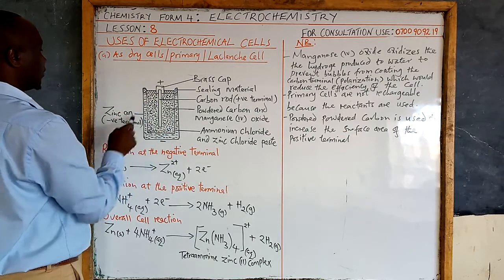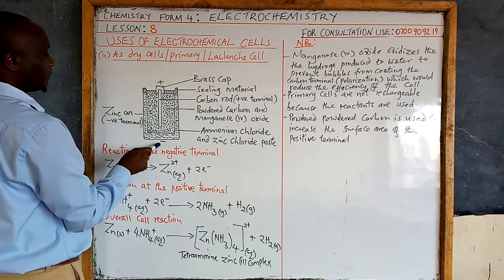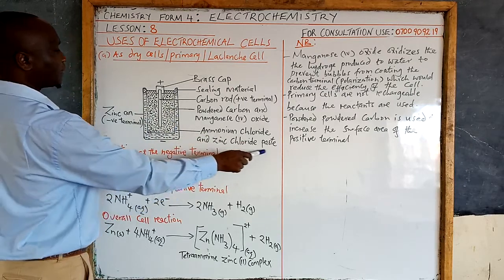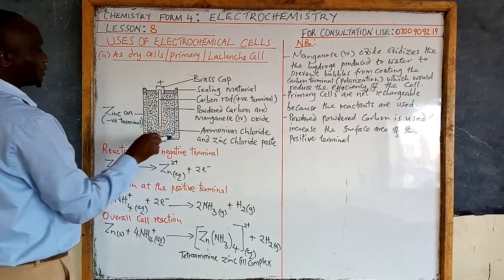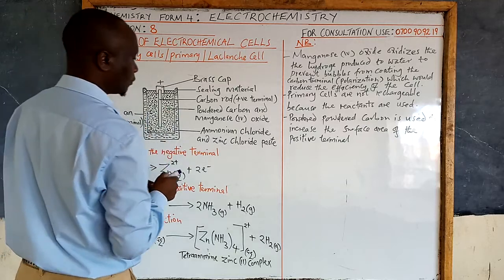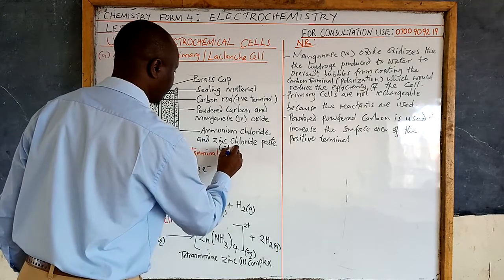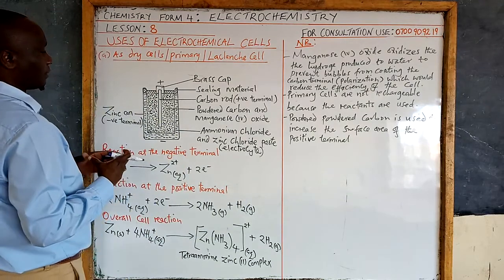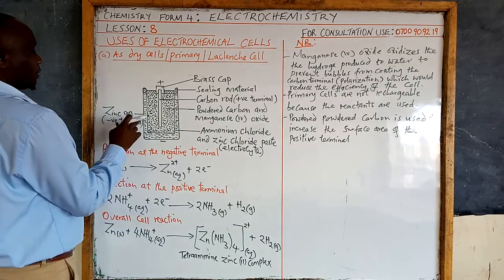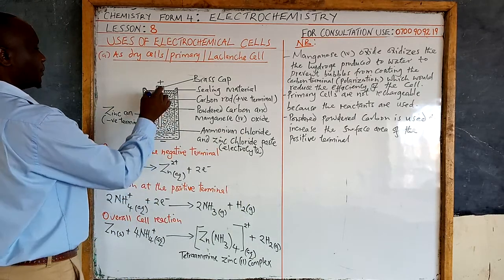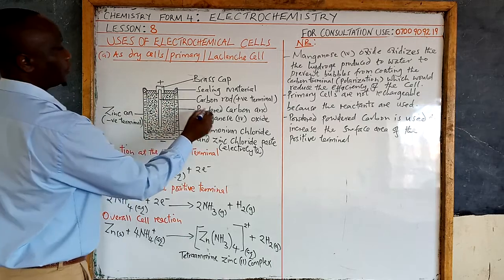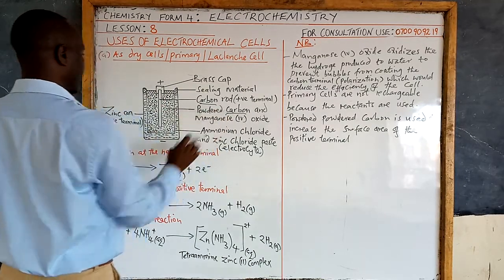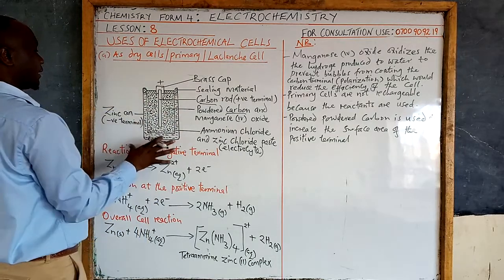The three main parts: the outer zinc can forms the negative terminal. The second part is the ammonium chloride and zinc chloride paste, which acts as the electrolyte. This is the interface or bridge between the negative terminal — the zinc can — and the positive terminal, which is the carbon rod.